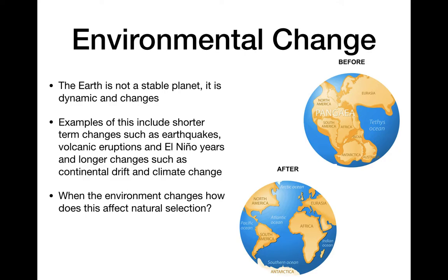When the environment changes, how does this affect natural selection? Think about that for a second. One of the four principles of natural selection is adaptation, which shows how an organism is tied to its environment. If its environment changes, it may no longer be well adapted. In our simulation lab with the squirrel-mouse creatures in the forest, we saw how snow created a different environment and affected which individuals were better camouflaged, affecting evolution.